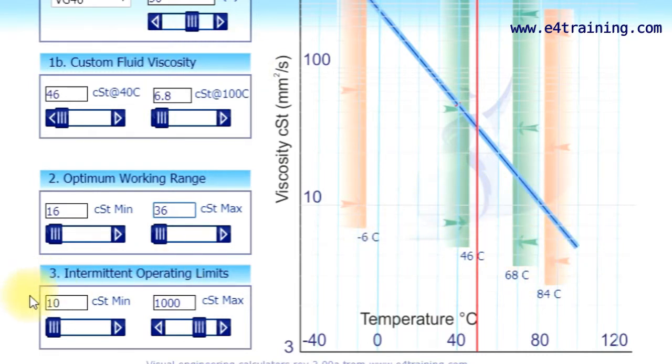We also have on the pumps an intermittent operating limit specification, 10 to 1000 centistokes. You can run at 1000 at startup and it won't destroy the pump, but certainly you can't run for long periods like this. It's just purely to start or very short periods at high temperature. So you don't want to be in these regions, but that's the absolute limit which is often useful.